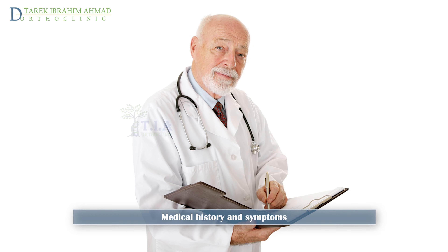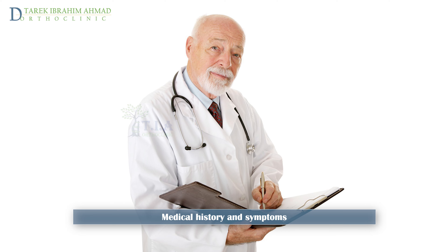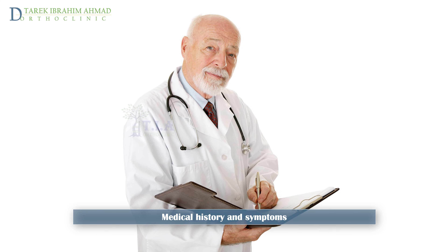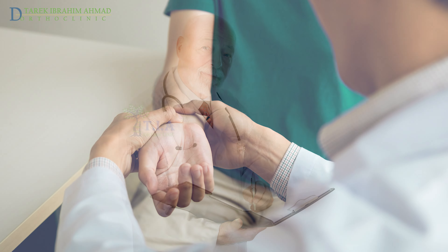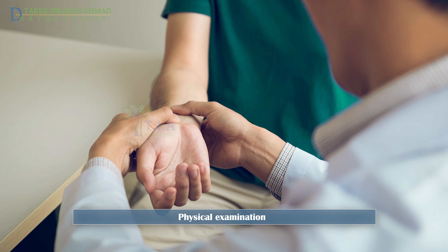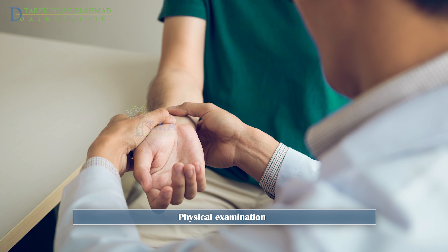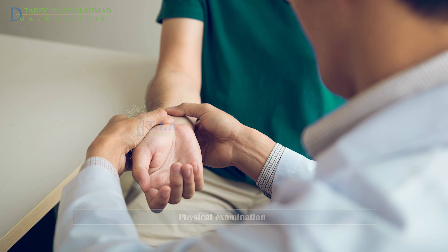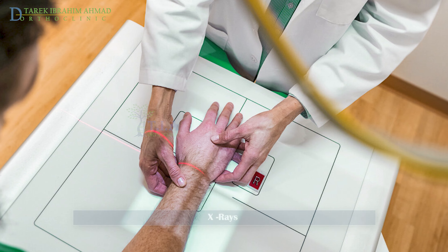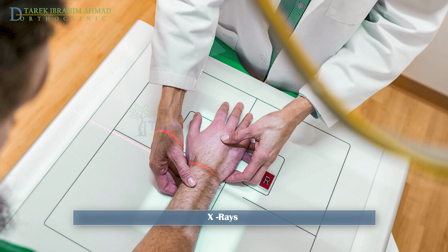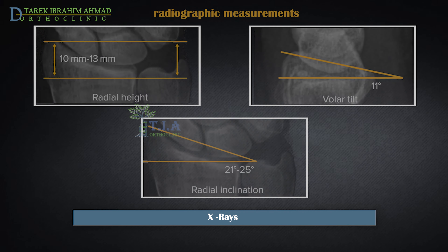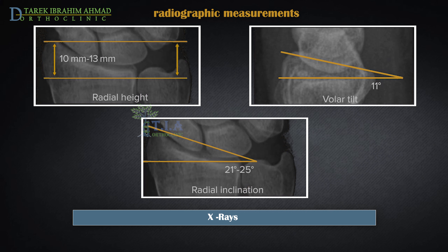Diagnosis: The physician will ask the patient for a description of symptoms, how they started, and what triggers them. The doctor will examine the wrist and forearm and may also manipulate the wrist or ask patients to perform certain hand or wrist movements if they are able. X-rays of the wrist are needed to confirm the diagnosis. Three important measurements can be determined using the X-ray, and these measurements are often abnormal when a fracture of the distal radius is present.